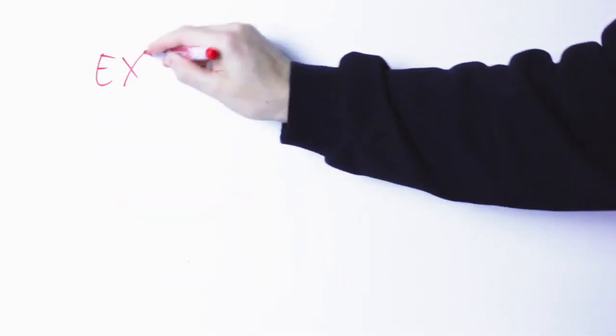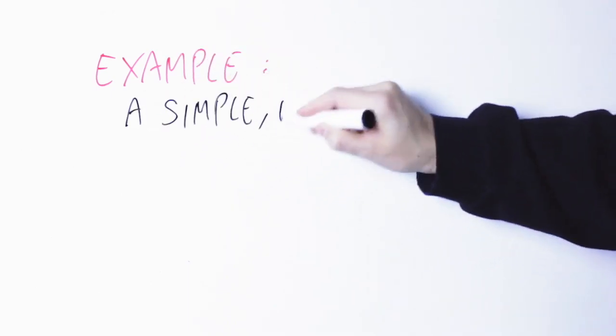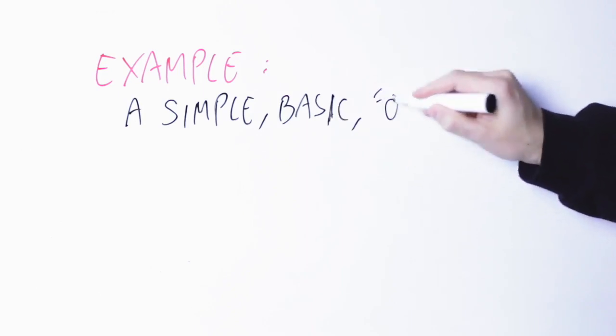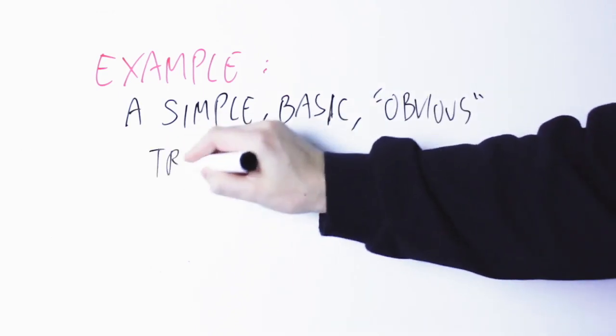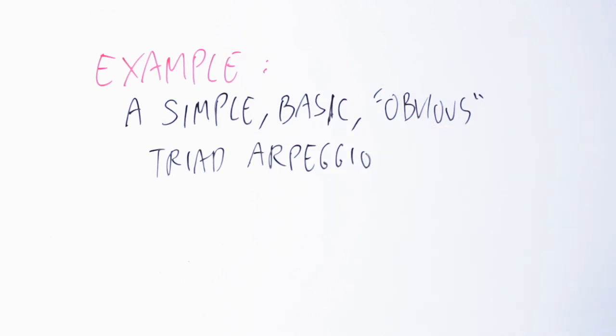Today we are going to see how a simple thing like a triad arpeggio can give us hundreds and hundreds of possibilities when we solo, and this just using the notes of that triad arpeggio. We are not going out of the notes of the arpeggio.